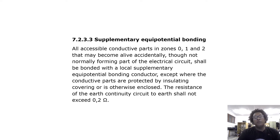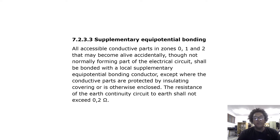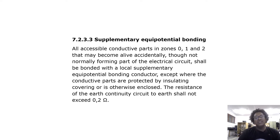Regarding supplementary equipotential bonding: all accessible conductive parts in zones 0, 1 and 2 that may become live accidentally — not normally forming part of the electrical circuit — shall be bonded with a local supplementary equipotential bonding conductor, except where conductive parts are protected by insulating covering or are otherwise enclosed. The resistance of the earth continuity circuit shall not exceed 0.2 ohms.